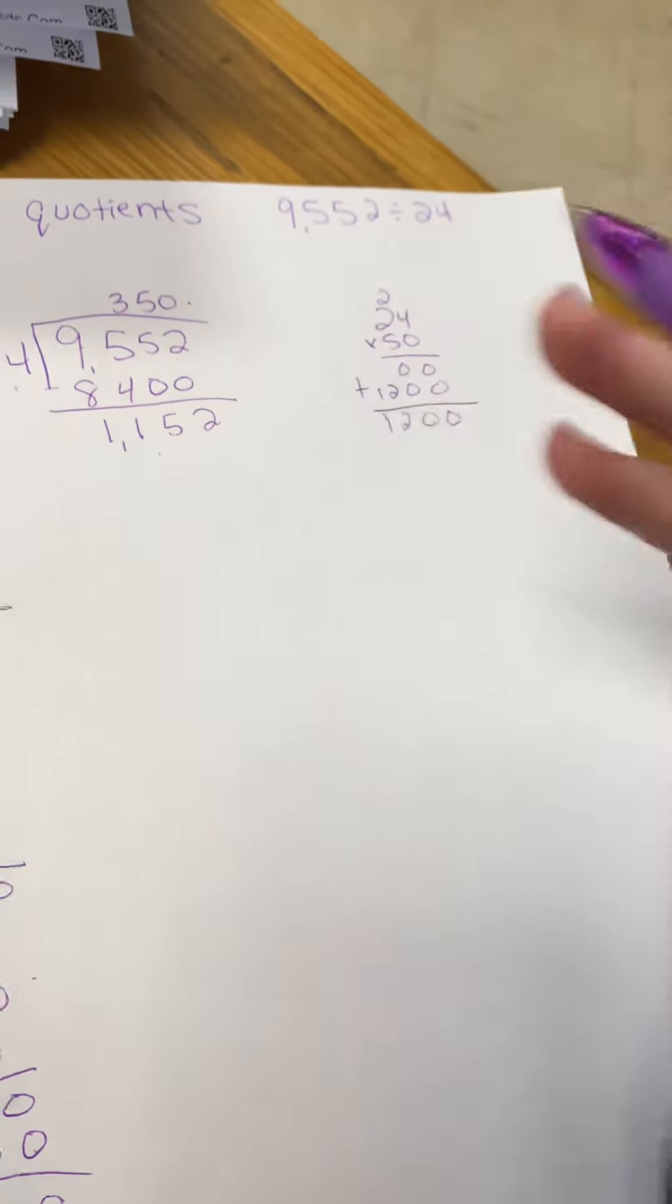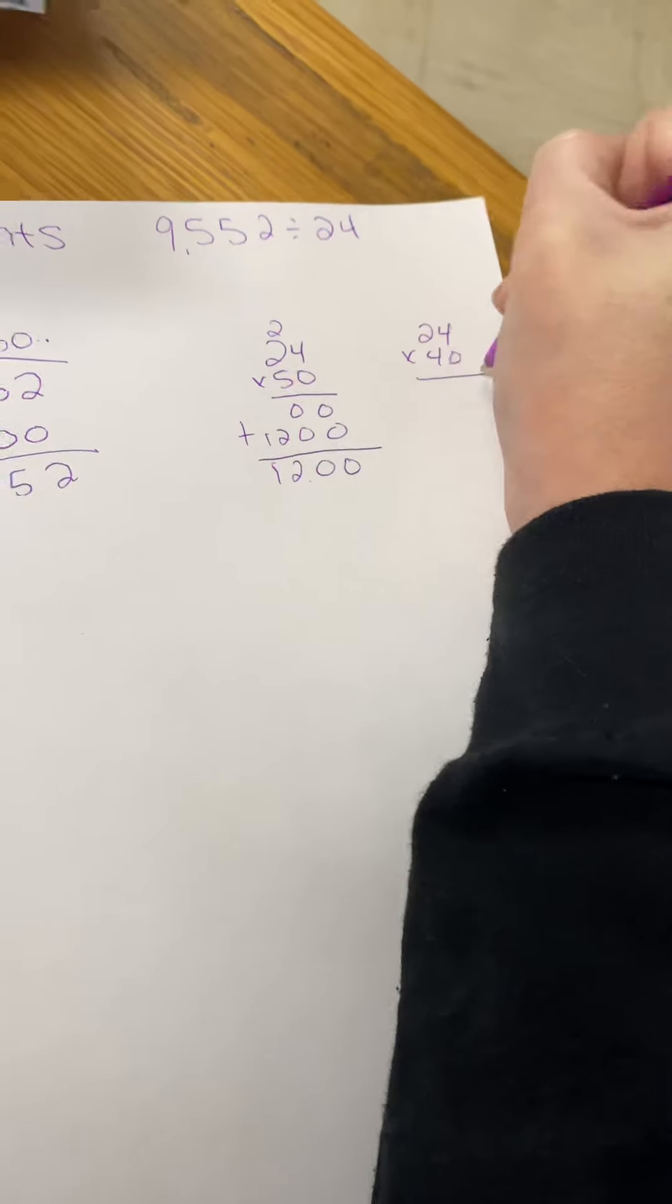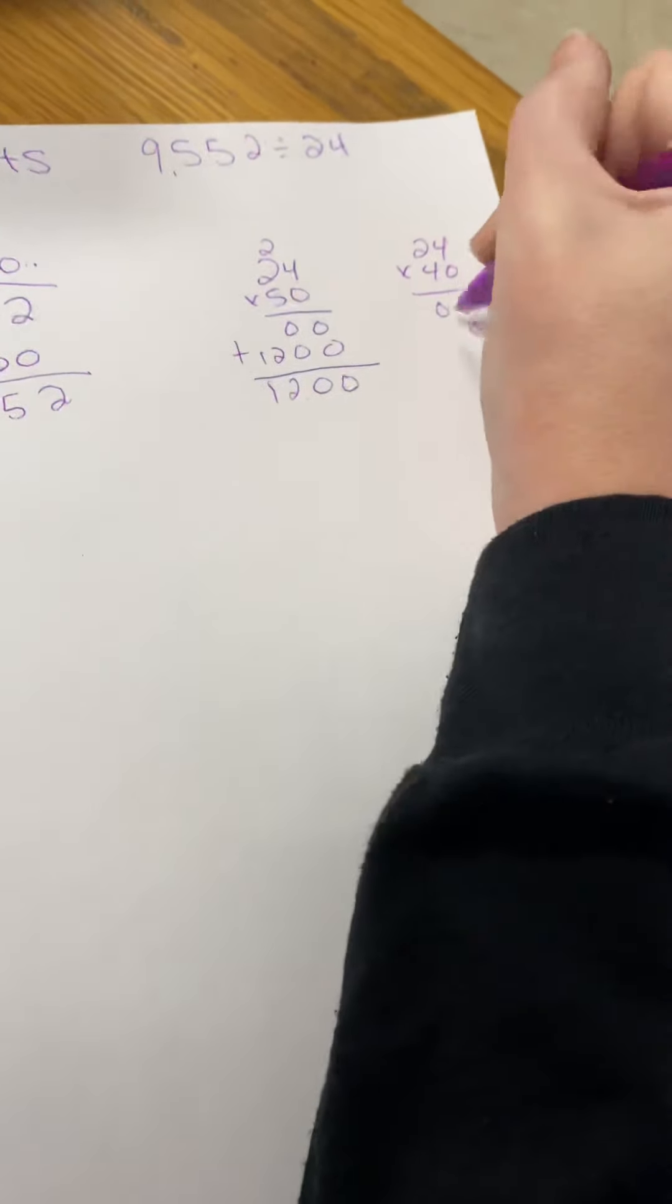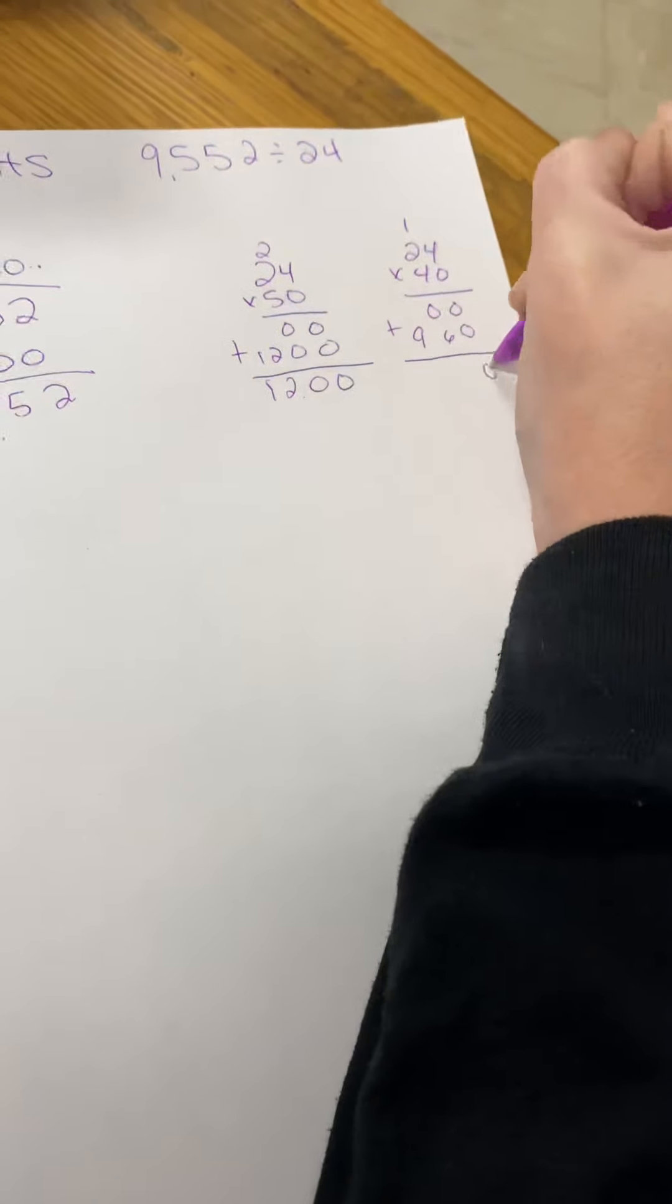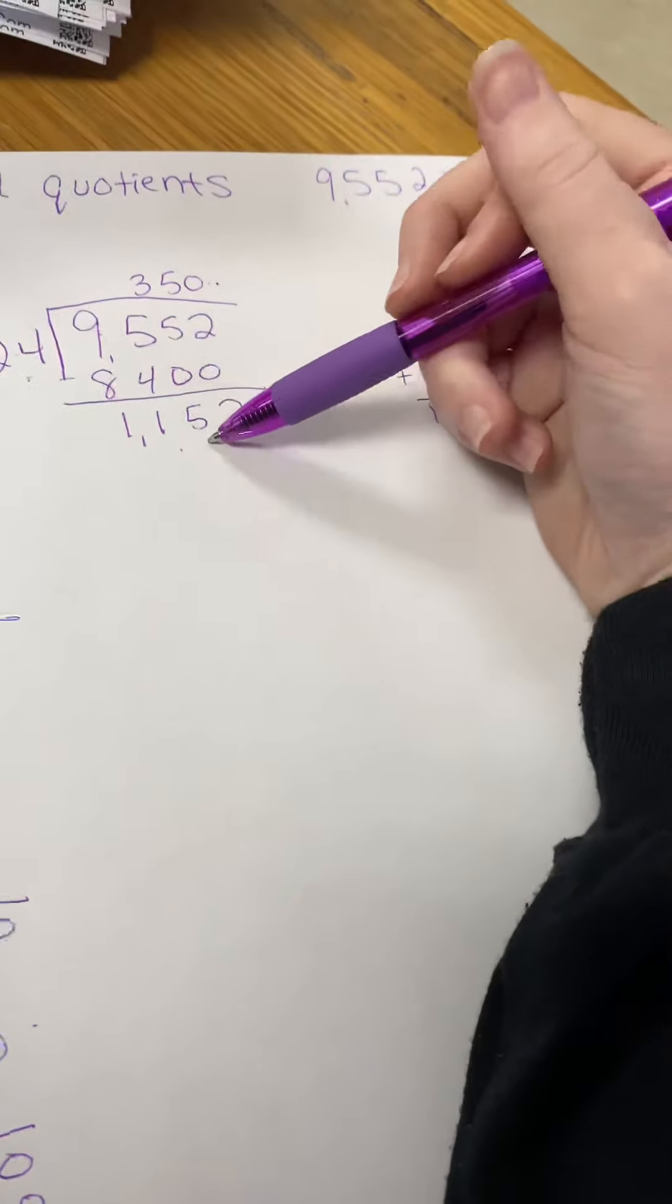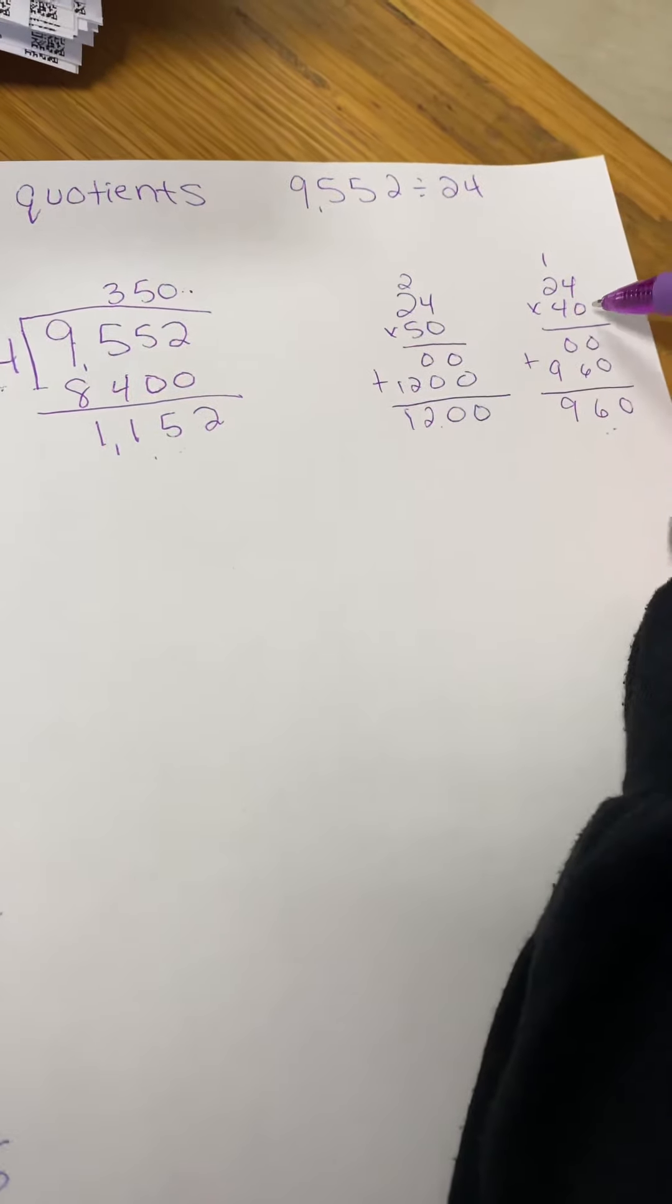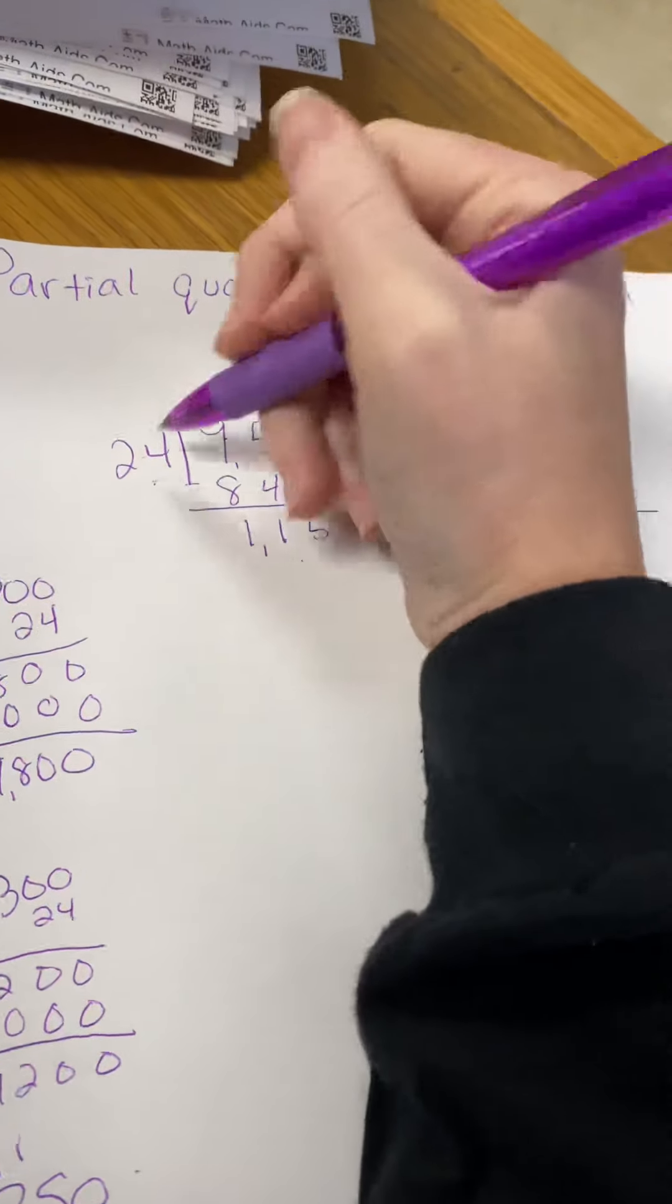You are not allowed to go over, so you need to go back to 24 times 40. 0, 0, 0, 16 and 960 is what you should get after you add your partial products. This is pretty close. 960 is pretty close to 1,152 without going over. Again, you take your 40 and put it above your 350. 40 times 24, we found, gives you 960.